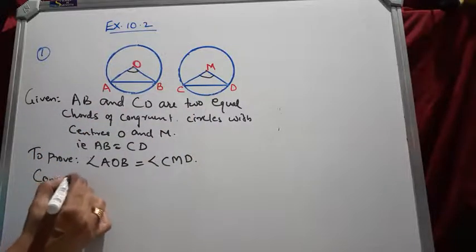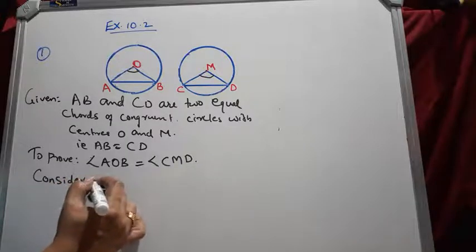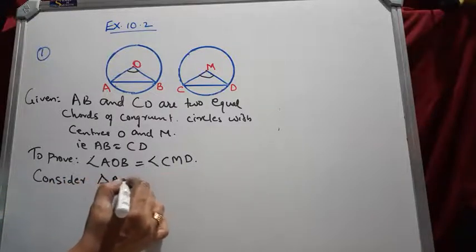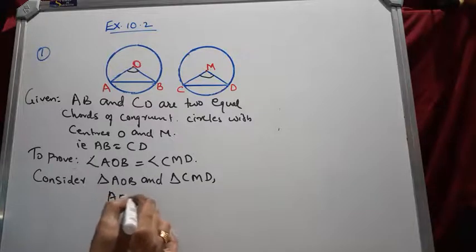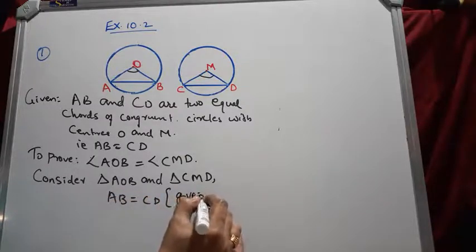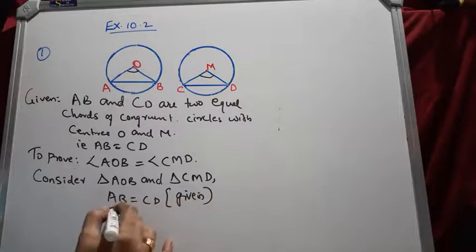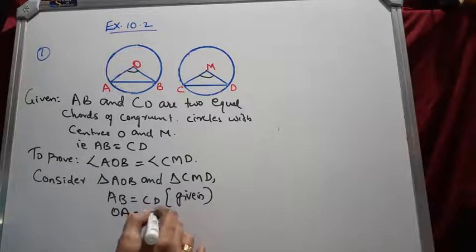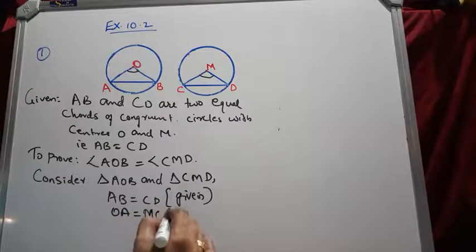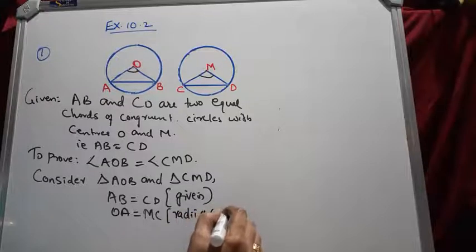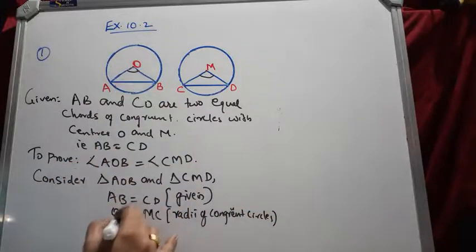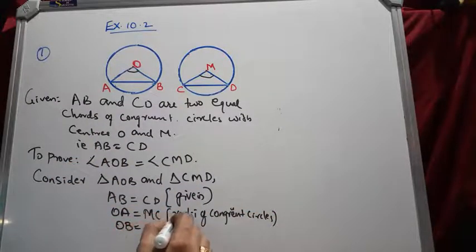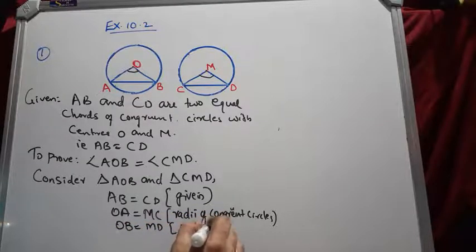To prove angle AOB equals angle CMD, we consider triangles AOB and CMD and prove them congruent. AB equals CD (given, equal chords). OA equals MC, as these are radii of congruent circles. Similarly, OB equals MD, for the same reason — radii of congruent circles.